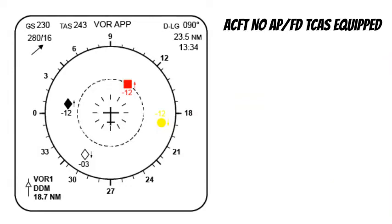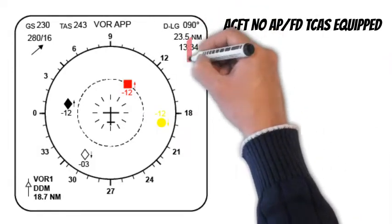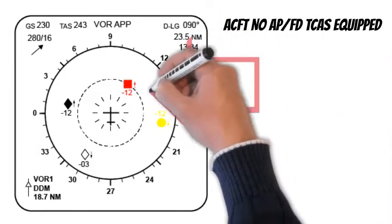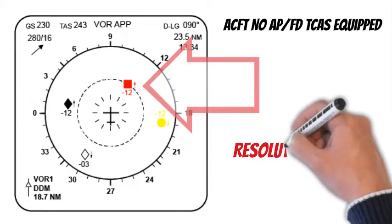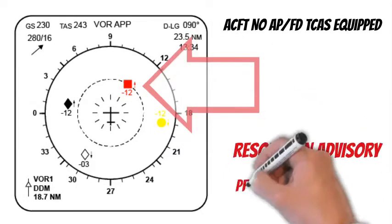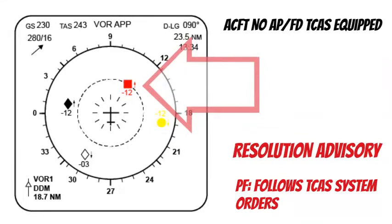If a Resolution Advisory, RA, is generated, the flight crew must always follow the TCAS RA orders in the correct direction, even if the TCAS RA orders are in contradiction with the ATC instructions, at the maximum ceiling altitude, or it results in crossing the altitude of the intruder aircraft.